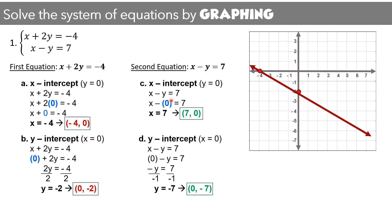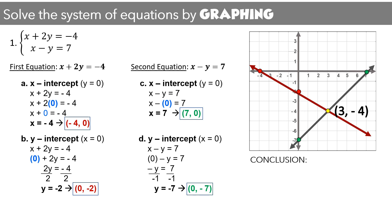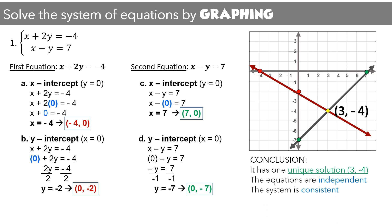Let us plot these two points. For the x-intercept, we locate positive 7 on the x-axis and plot the point. For the y-intercept, we locate negative 7 on the y-axis and plot that point, then connect the two points to form a line. As you can see, the two lines are intersecting, so there is one unique solution: the intersection point (3, −4), where x equals 3 and y equals negative 4. The equations are independent and the system is consistent.